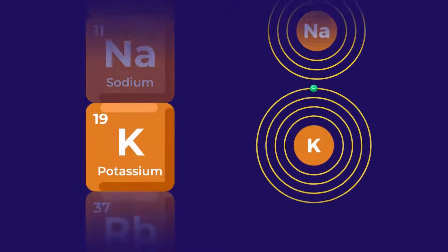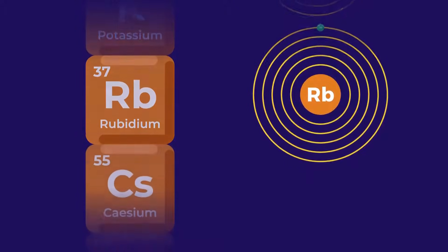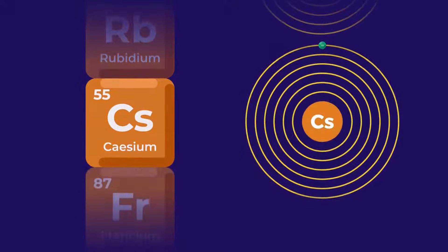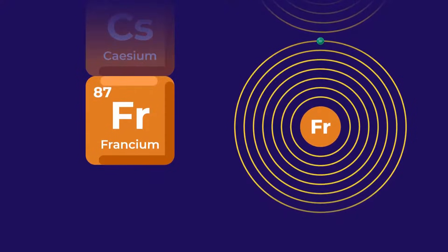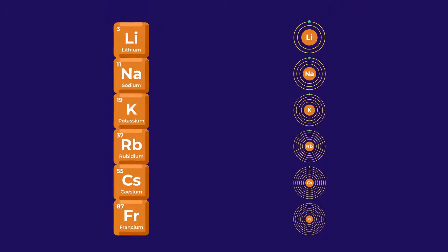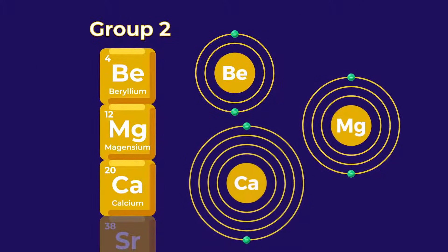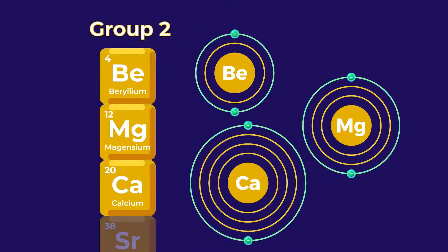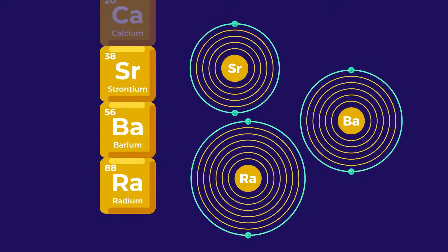This means that all atoms within a specific group will have the same amount of electrons on their outer shell. For example, all of the elements in group 1 will have one electron in the outermost shell of their atoms, while all elements in group 2 will have two electrons in their outermost shell.